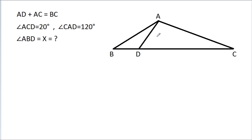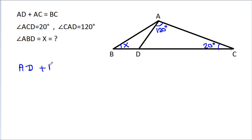In this video, we have given that AD plus AC is equal to BC, angle ACD is 20 degrees, angle CAD is 120 degrees, and angle ABD is X. We have to find X.